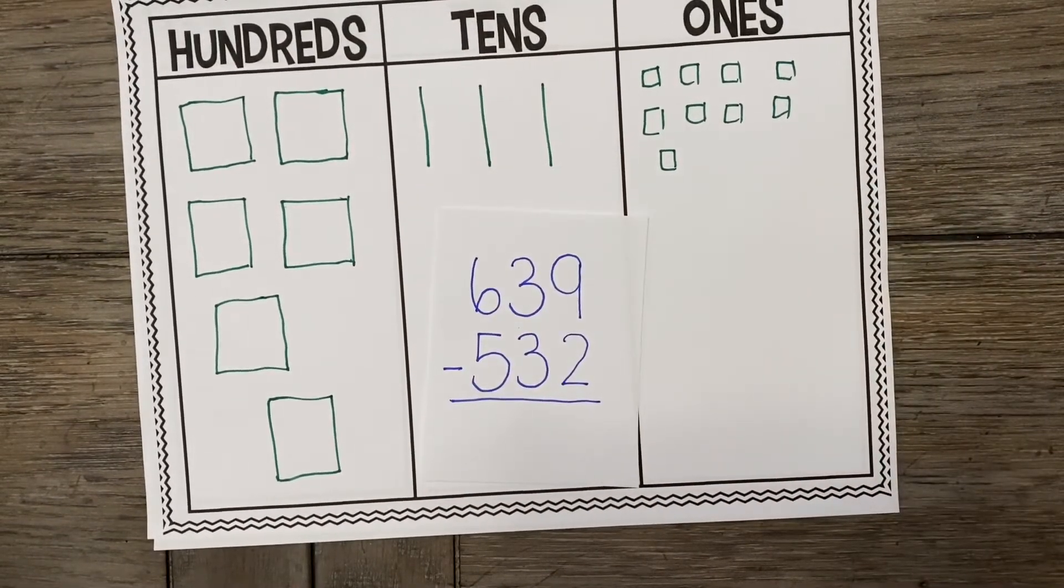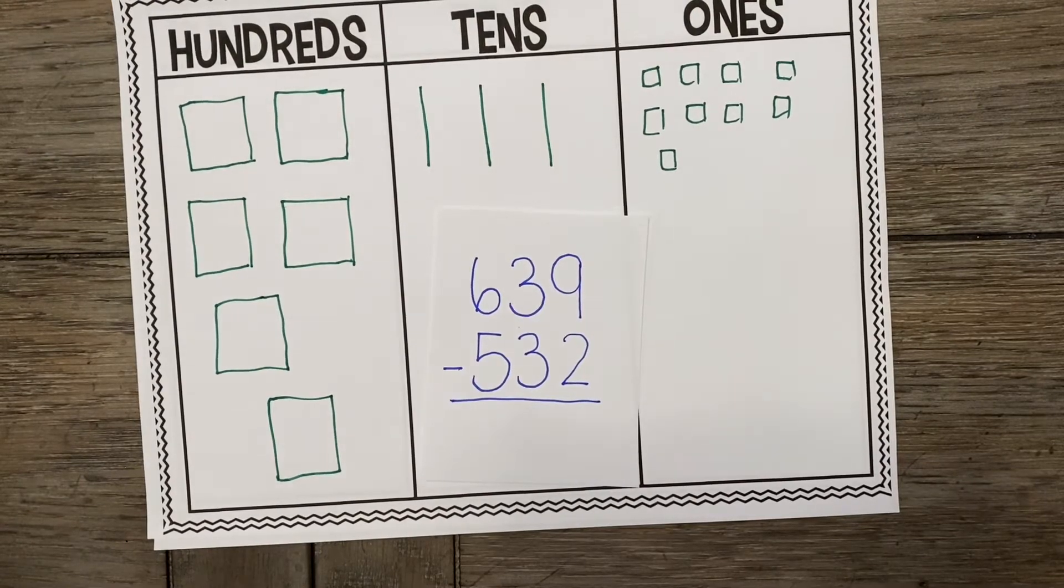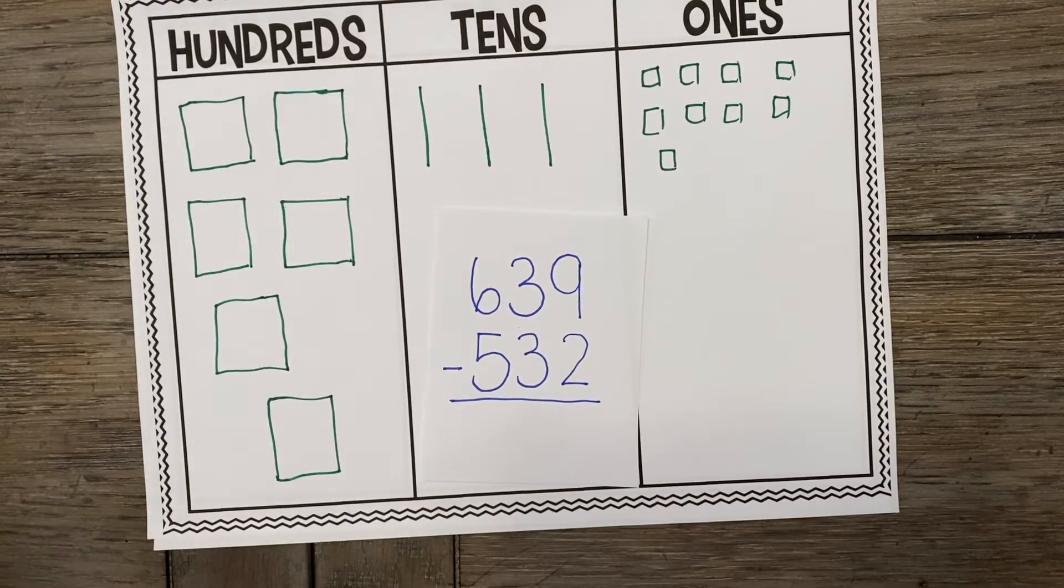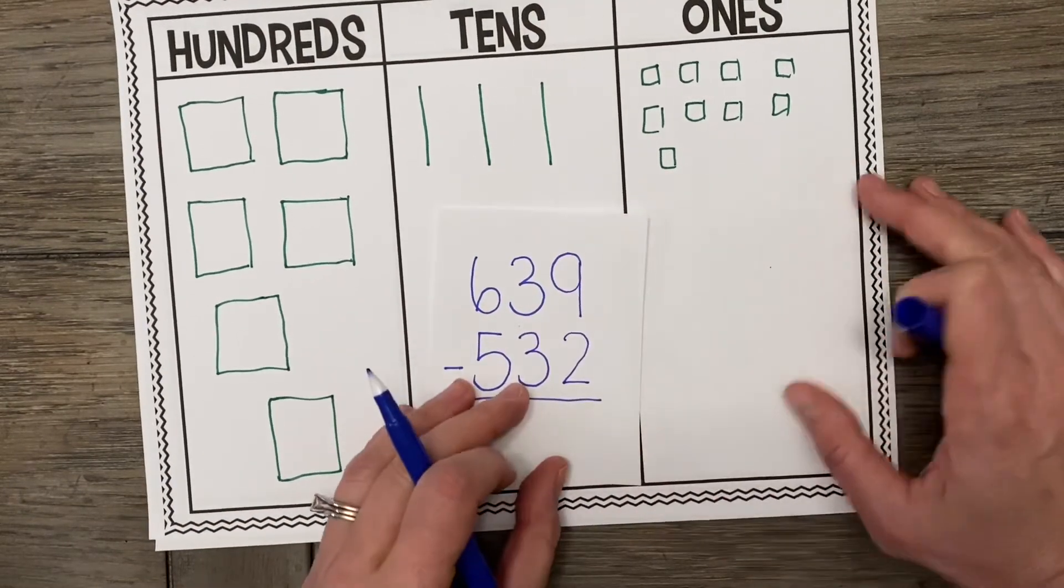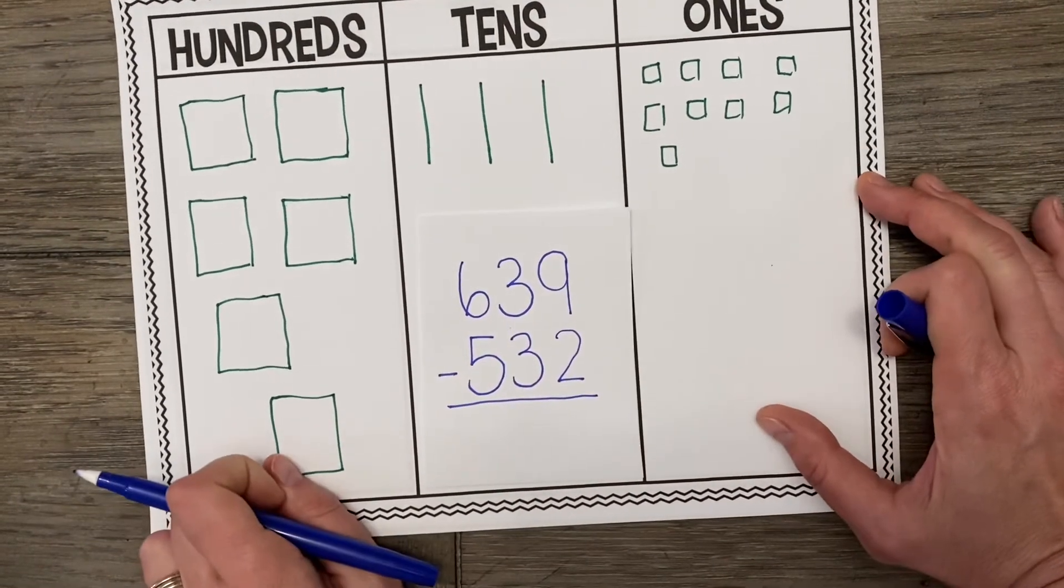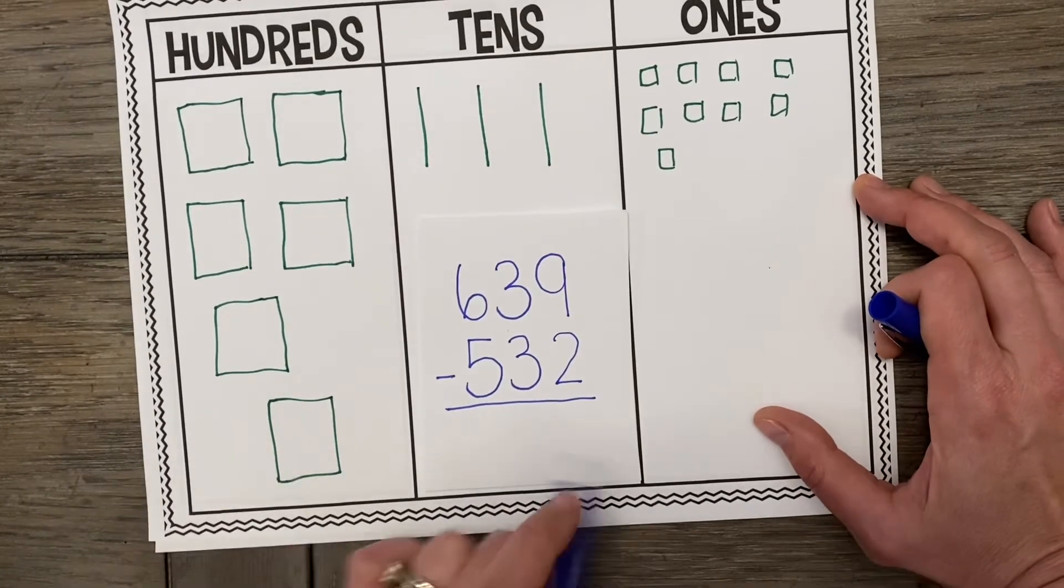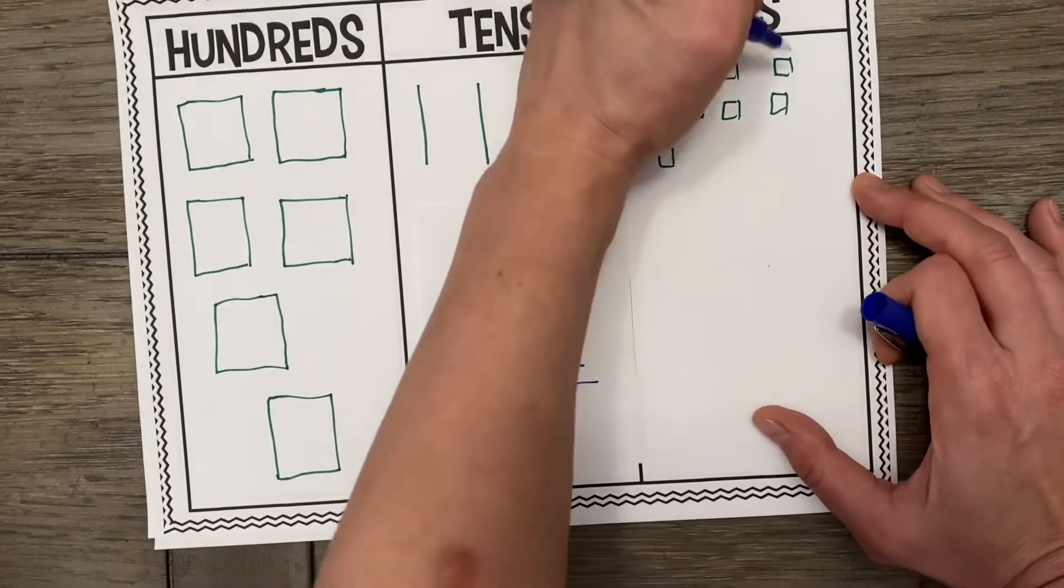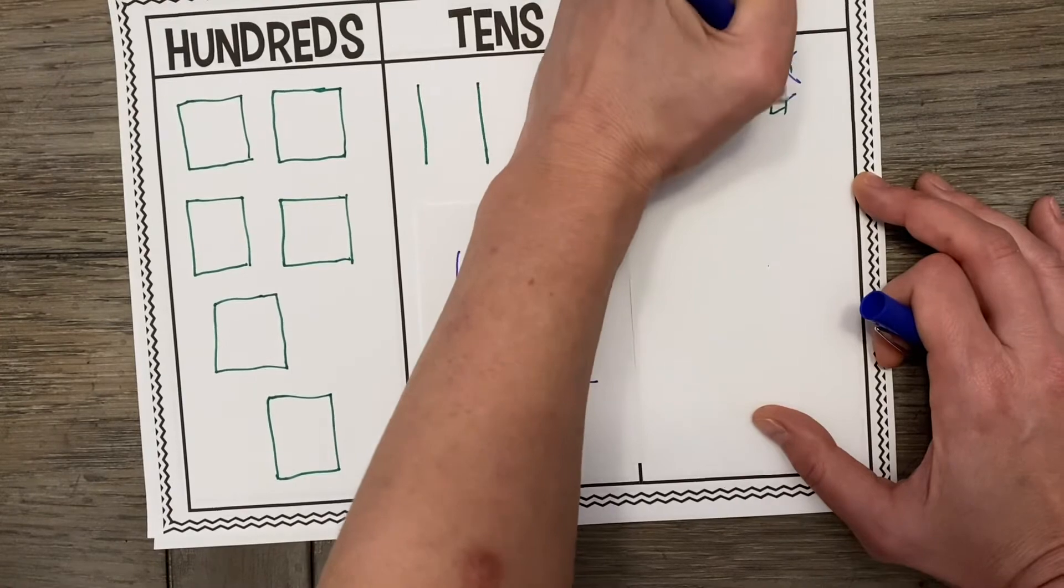So now it is time to subtract our 1s. Because remember, we always start with our 1s and we have to remember we work our way from the top to the bottom. So how many 1s are we taking away? That's right. We're taking away 2 ones. Let's cross out 2 of our 1s. 1, 2.